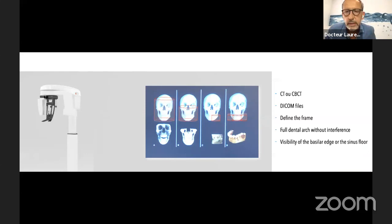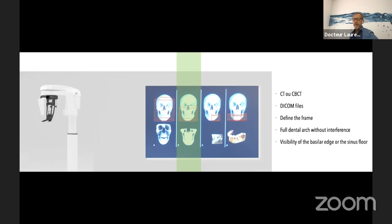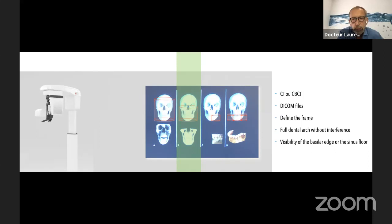First, CBCT or CT scan — we use the DICOM files. What's the best for immediate loading or full treatment? You can see the different volumes used. I think the best is the second one: you have to take from under the hyoid to the basal zone, because on the left and right it may be too big, giving the patient too much radiation. And on the right side, it's too small to have all the elements for perfect planning. Take care to have a full dental arch without interference, and perfect visibility of the basilar edge or the sinus floor.